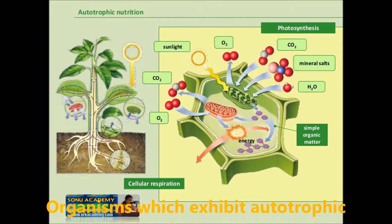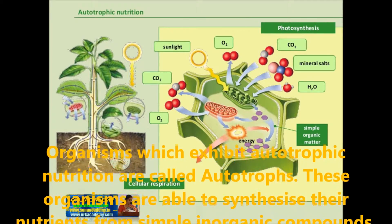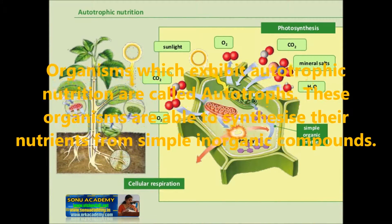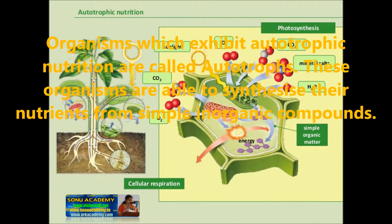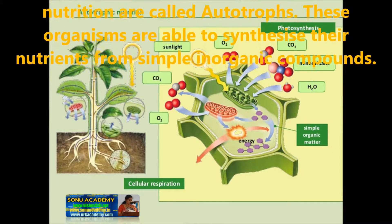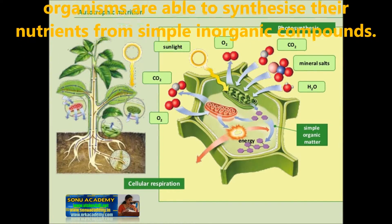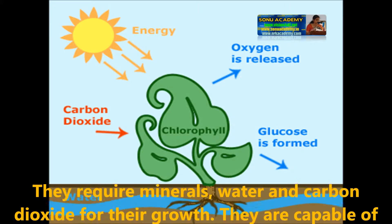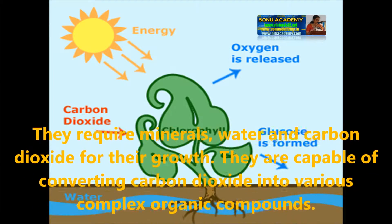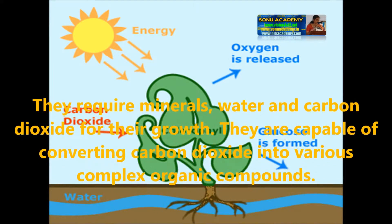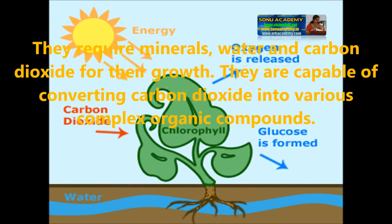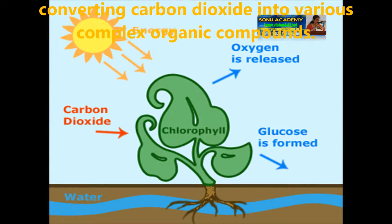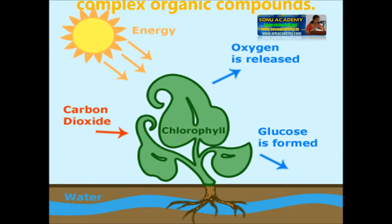Organisms which exhibit autotrophic nutrition are called autotrophs. These organisms are able to synthesize their nutrients from simple inorganic compounds. They require minerals, water, and carbon dioxide for their growth. They are capable of converting carbon dioxide into various complex organic compounds.